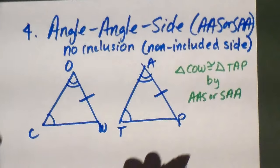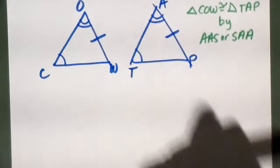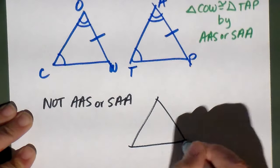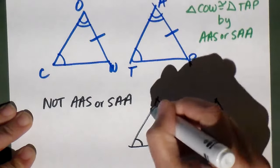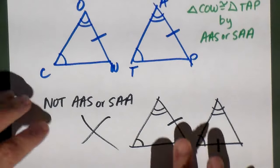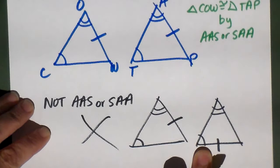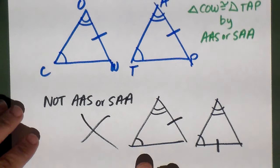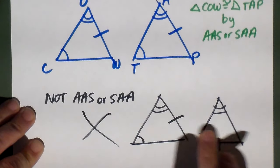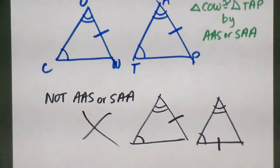Here's what is NOT angle-angle-side. If the marked congruent side is attached to the angle with two arcs in one triangle but attached to the angle with one arc in the other triangle, that is not AAS. The side has to be attached to the same corresponding angle in both triangles — same angle type to same angle type. If that doesn't match, the triangles are not proven congruent by AAS.